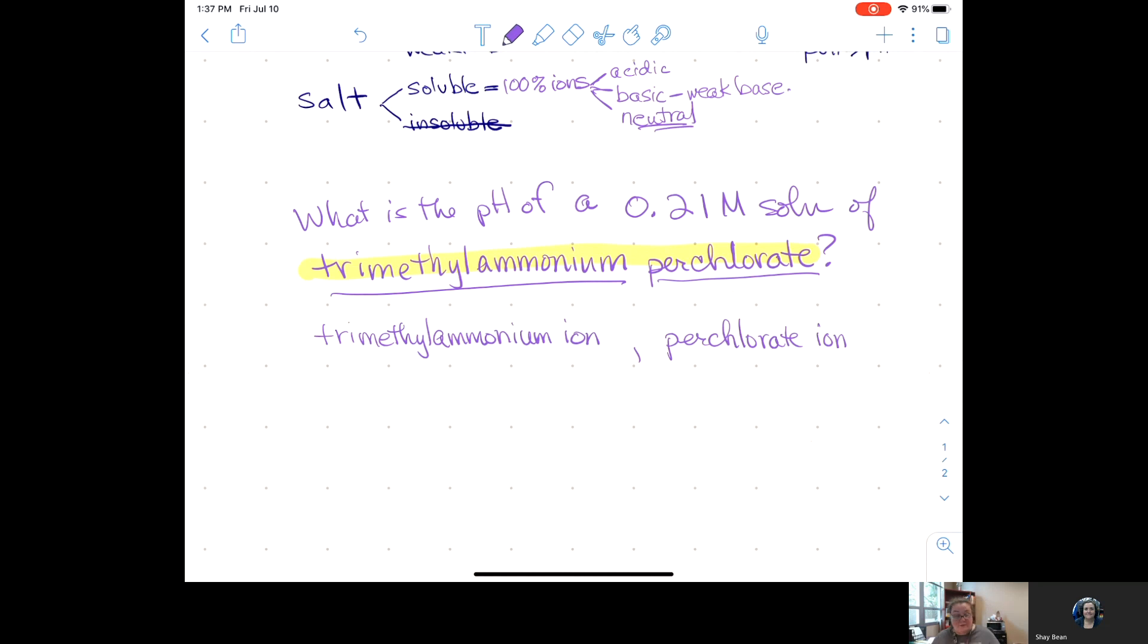Now, the perchlorate ion should look familiar from Gen Chem 1. You may or may not have had to memorize the polyatomic ions, but you should at least be familiar with them. And maybe go get you a list of polyatomic ions to have handy as you take your homework, your quizzes, your exams. When you look up the perchlorate ion, it is ClO4 with a minus charge. That one I expect you to know or to know fairly easily.